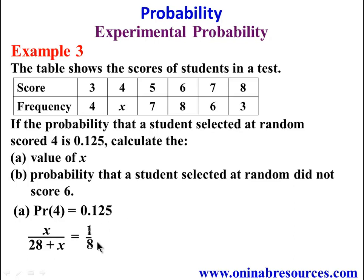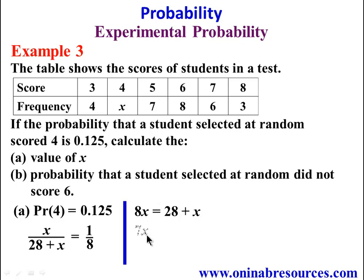Expressing 0.125 as a fraction for easy manipulation gives 1 over 8. Cross-multiplying, we have 8X equals 28 plus X. Bringing X to this side, we have 7X equals 28, where X equals 4, dividing both sides by 7. And that's all for the value of X, the solution of example 3A.